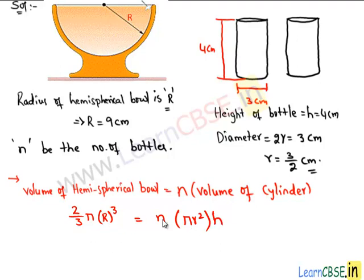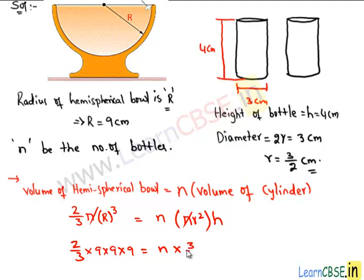Substituting these values, π on the left-hand side and right-hand side cancel. We then have (2/3) × 9³ = n × (3/2)² × 4. That gives us (2/3) × 9 × 9 × 9 on the left, and n × (3/2) × (3/2) × 4 on the right. The 2 × 2 in the numerator cancels the denominator 4.